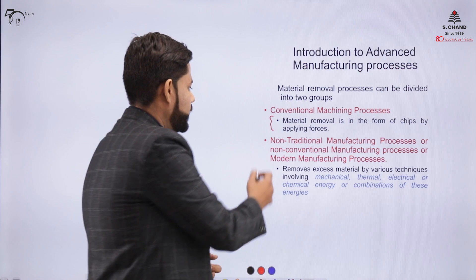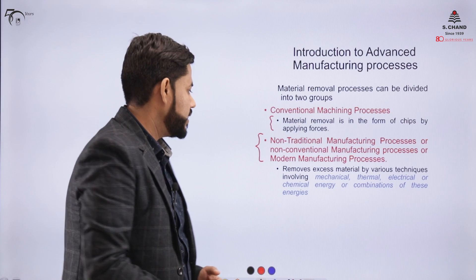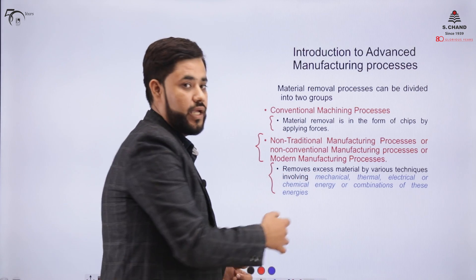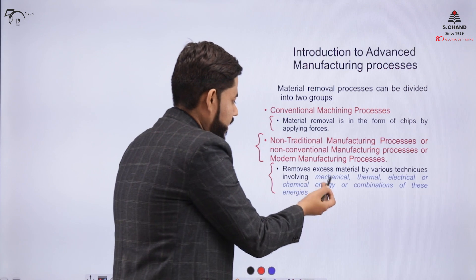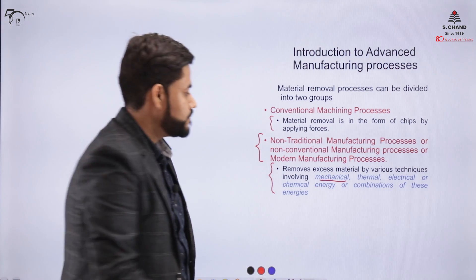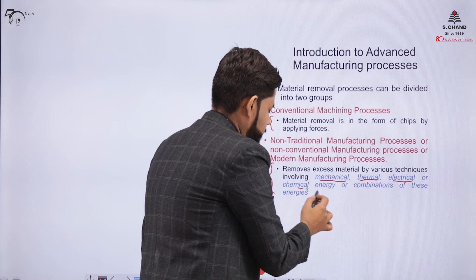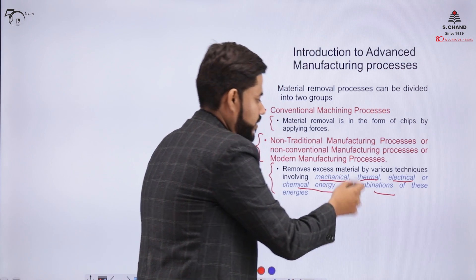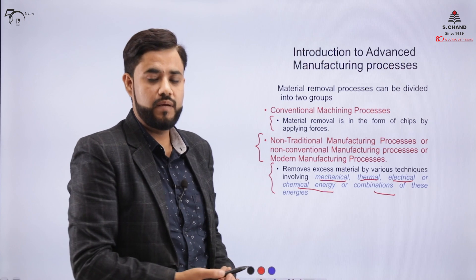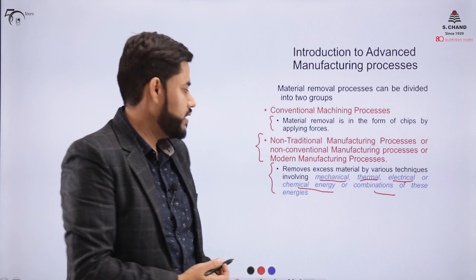In the case of a non-traditional or non-conventional manufacturing process, we remove the excess material by incorporating certain techniques — which can be mechanical, thermal, electrical, chemical, or a combination of all these energies. So here we incorporate mechanical energy, thermal energy, or electrical energy so that the metal is removed.